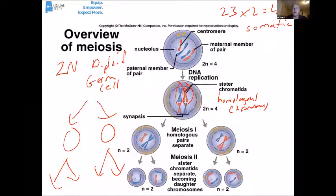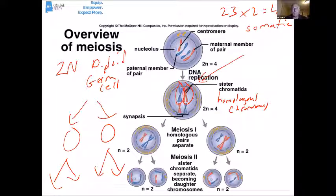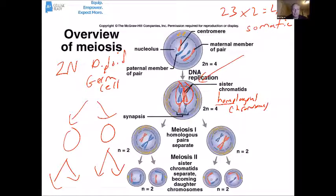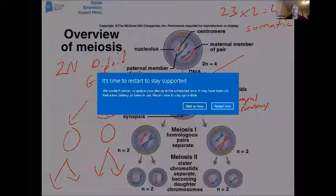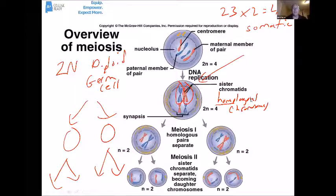They're in different colors because one of those chromosomes came from that person's father and one came from their mother. They're not called homologous because they're identical — they're not. They came from different people. They're called homologous because they have the same genes in the same order. They may have different alleles — different versions of those genes — but they control the same traits, and those genes are in the same order.